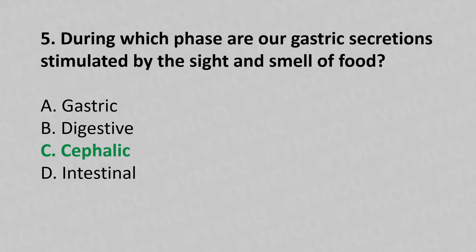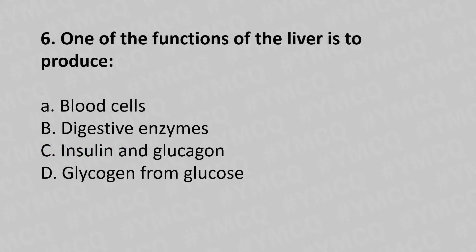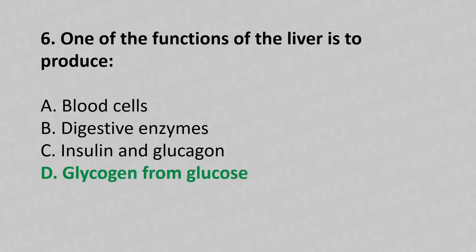Now let's move to question number 6. One of the functions of the liver is to produce: Option A: Red Cells. Option B: Gastric Enzyme. Option C: Insulin and Glucagon. Option D: Glycogen from Glucose. And the answer is Option D: Glycogen from Glucose.